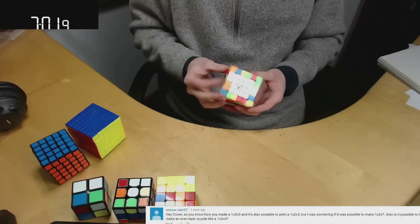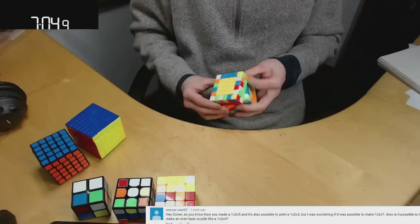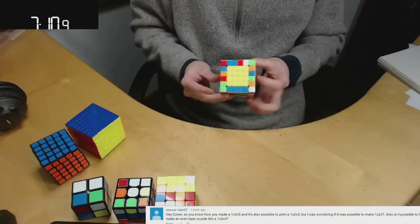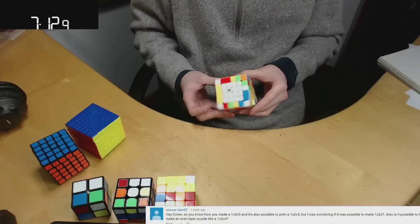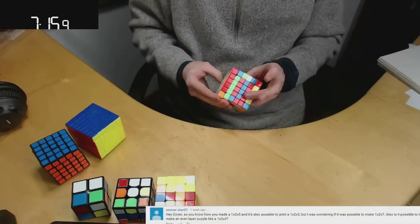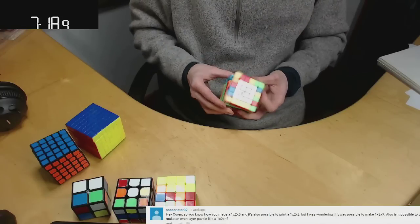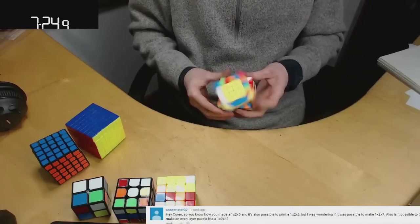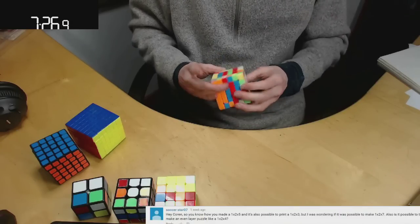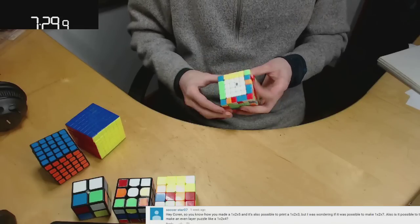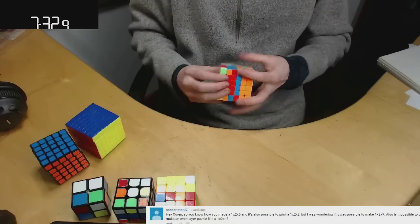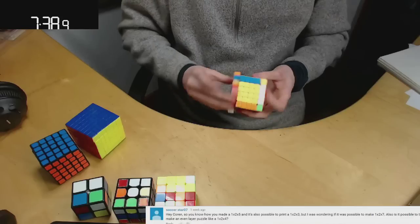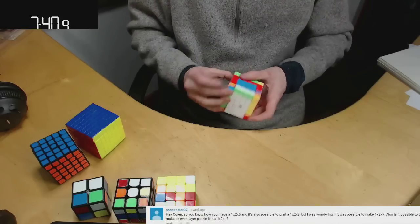So you know how you made a 1x2x5 and it's also possible to print a 1x2x3, but I was wondering if it is possible to print a 1x2x7. Also is it possible to make an even layer puzzle like a 1x2x4? So it's definitely possible to make a 1x2x7. Oscar van Deventer made a 1x2x13, so it's definitely possible up until 13 layers at least, probably more. And as for a 1x2x4, that would be pretty easy because you would just have a 1x2x2 and then you would just add little hooks. You know, add little two pieces on the top and bottom and there you go.